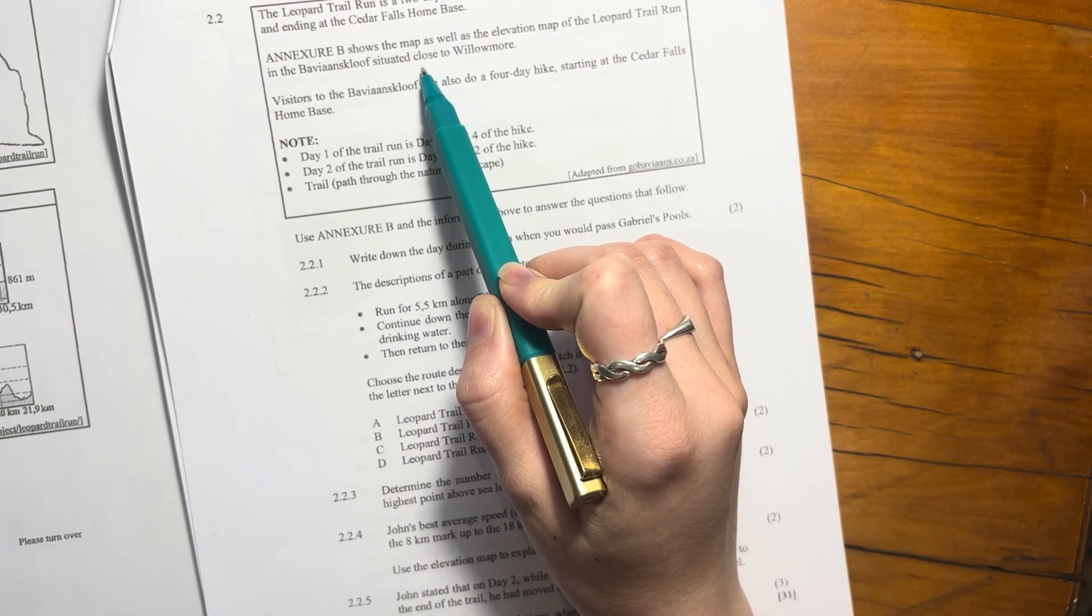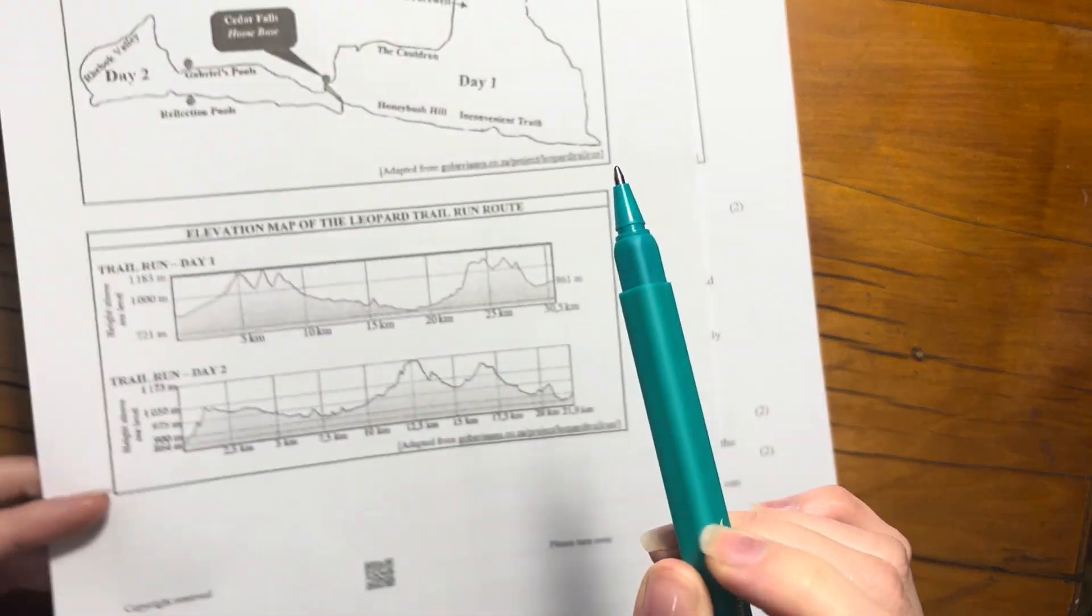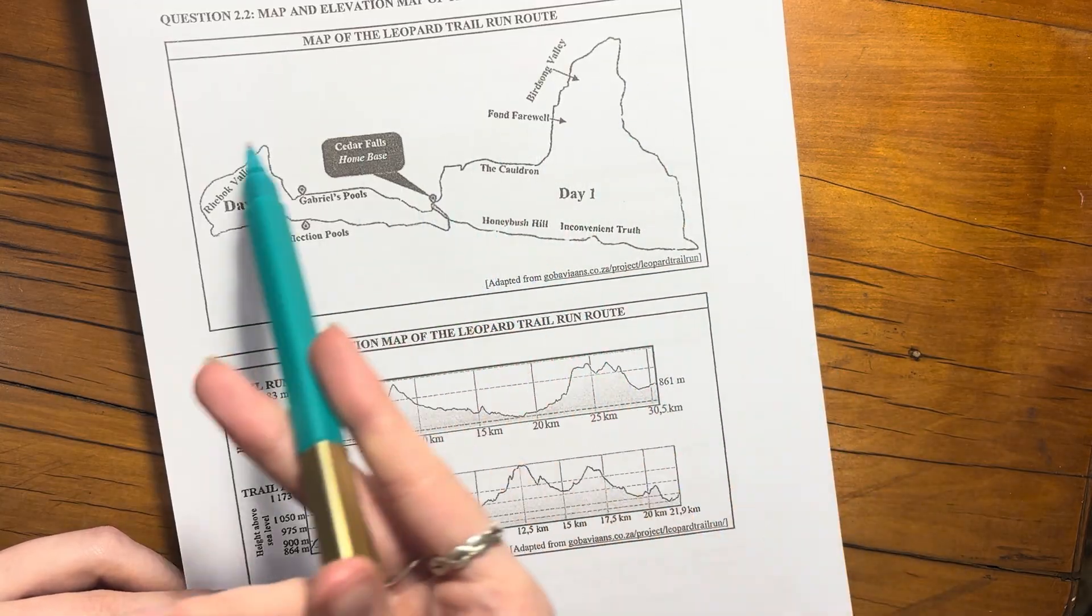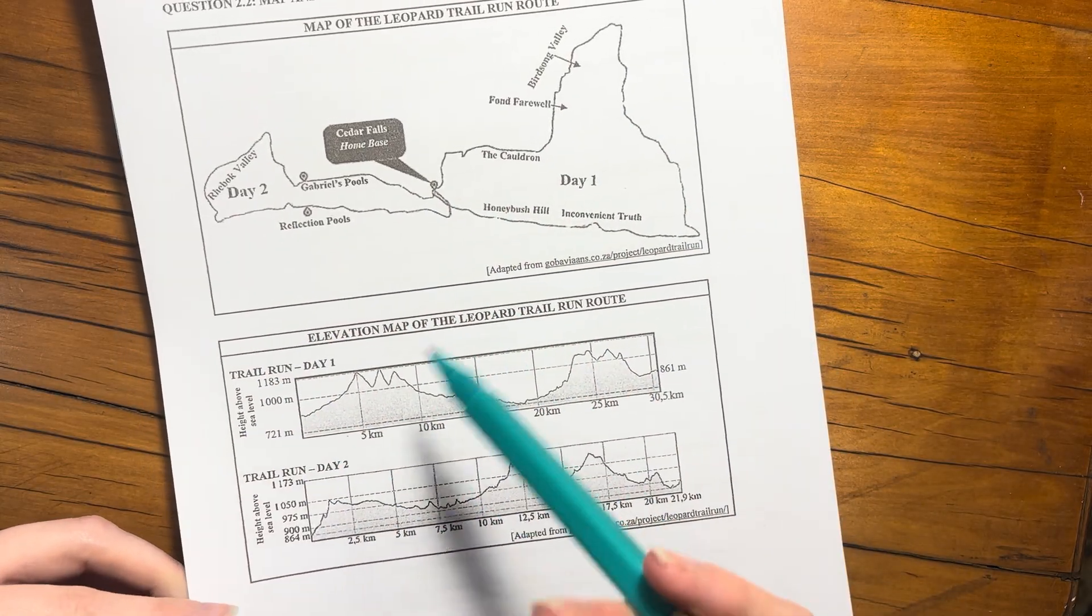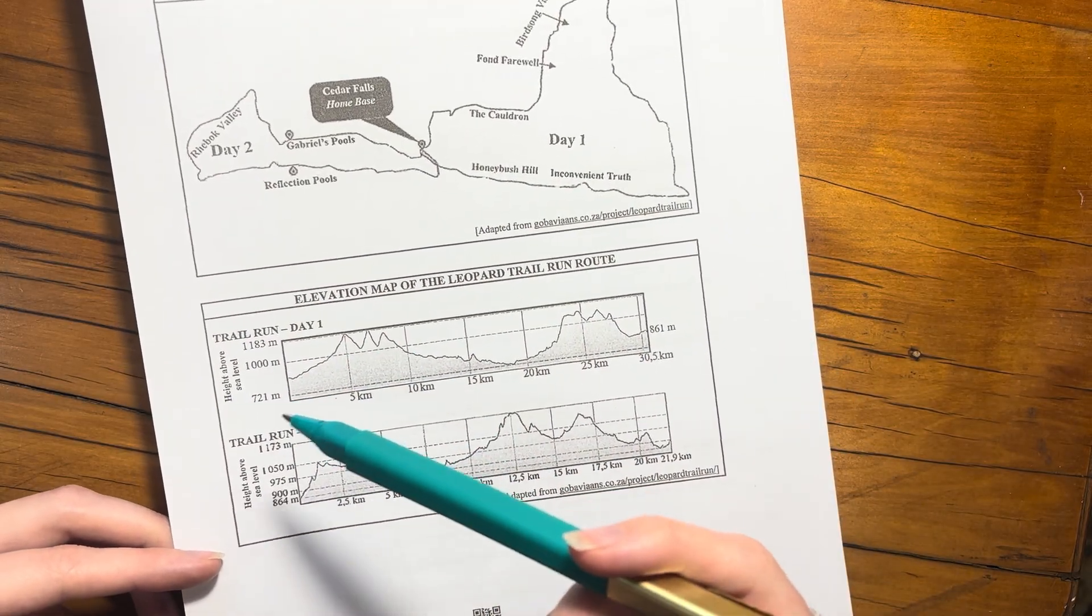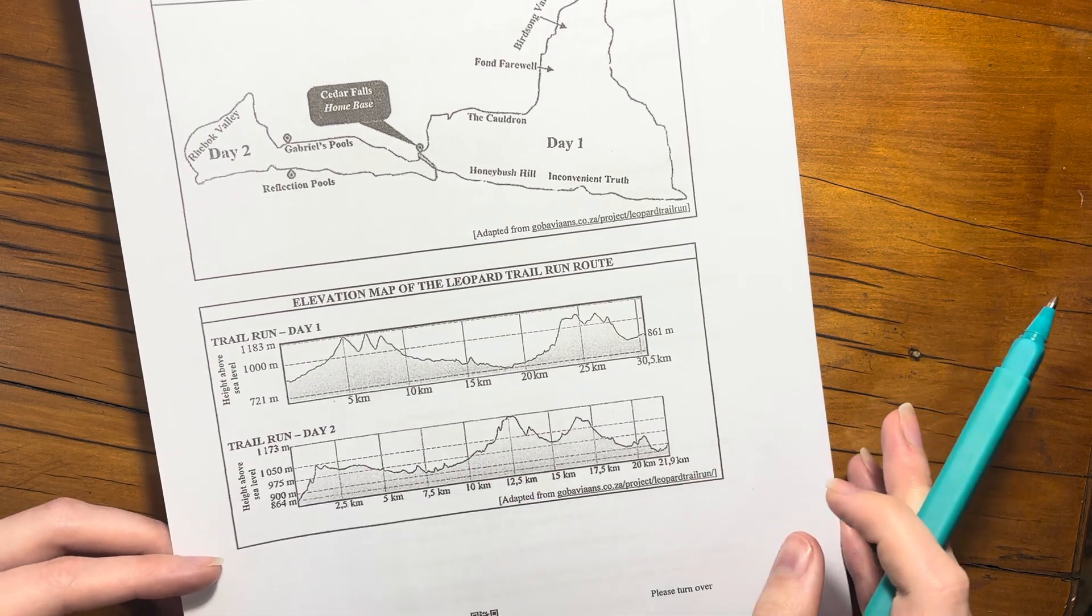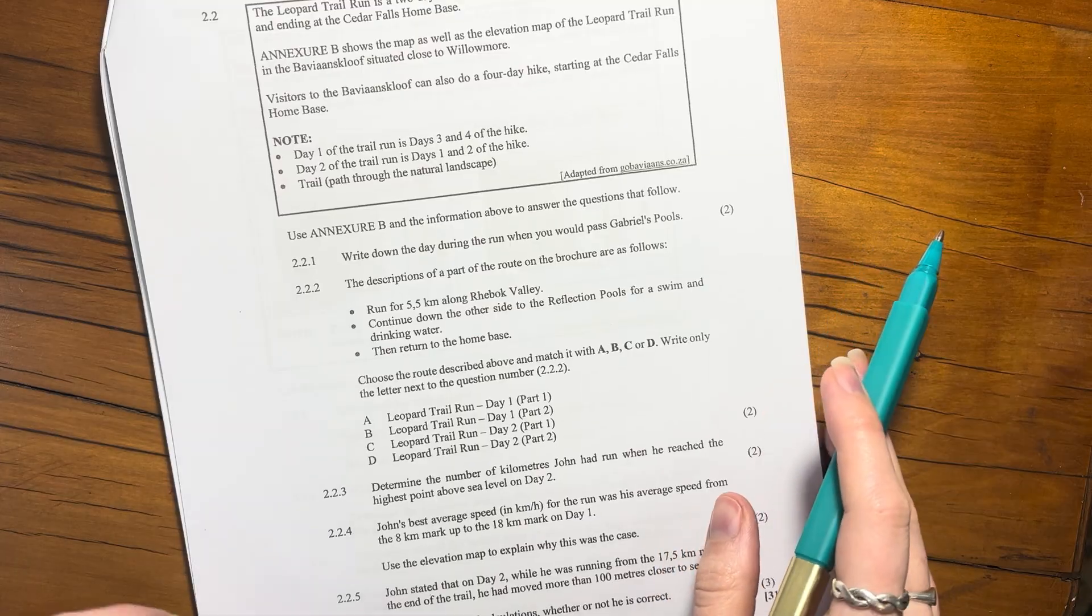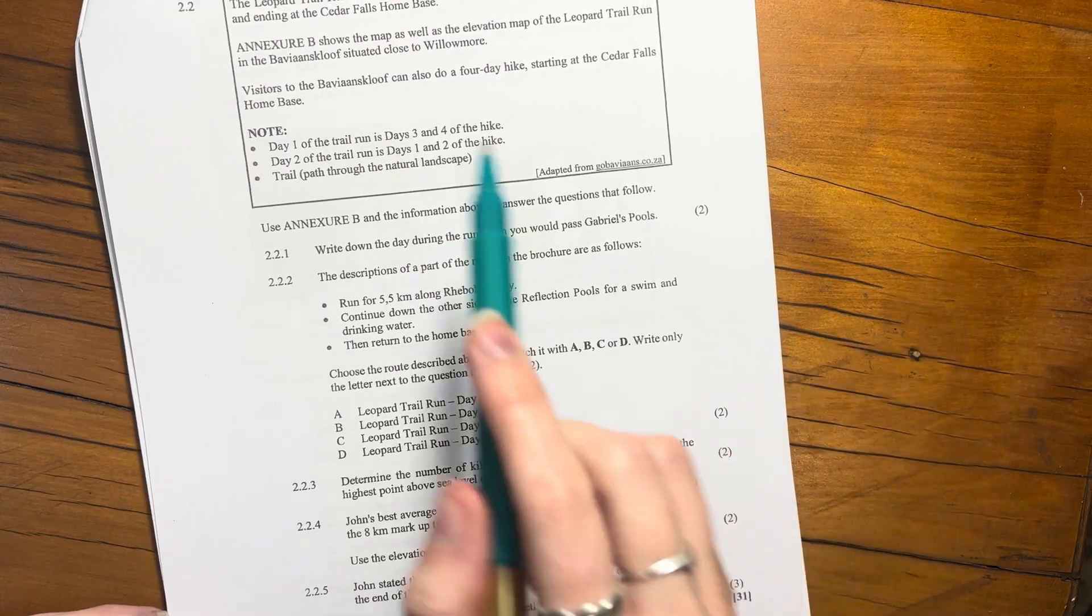The cliff is situated close to Willowmore. Here it is, make sure that you're looking at the right annexure. There's the route from an aerial perspective, and then here's elevation. Remember, elevation basically means meters above sea level, so how much is it elevated from sea level.